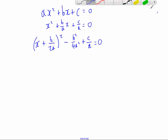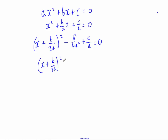Next I'm going to bring both of those terms to the other side, leaving x plus b over 2a, close bracket, squared equals. Adding b squared over 4a squared to both sides gives b squared over 4a squared on the right. Then taking c over a from both sides gives minus c over a.